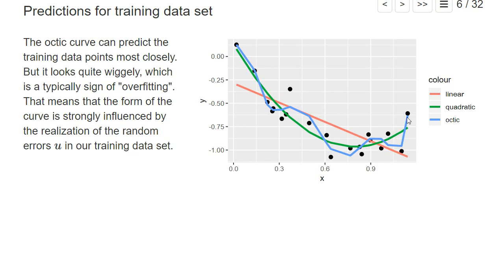If you compute the sum of squared residuals—the vertical difference between the black points and the curves—you'll see that it's smallest for the optic function.